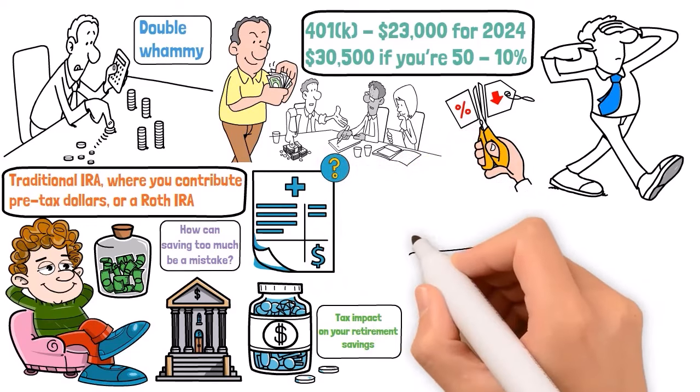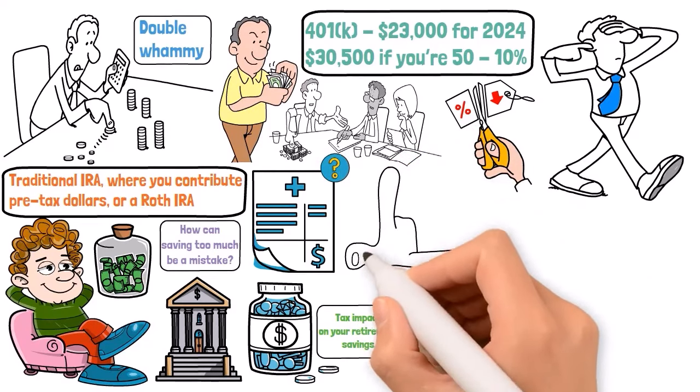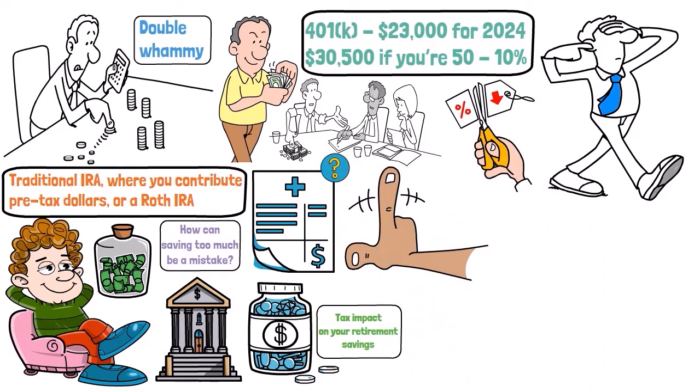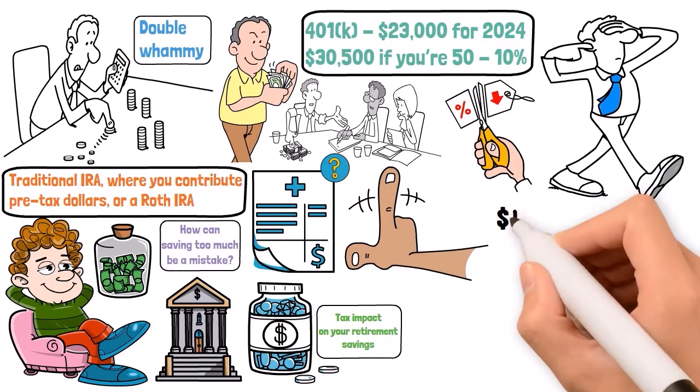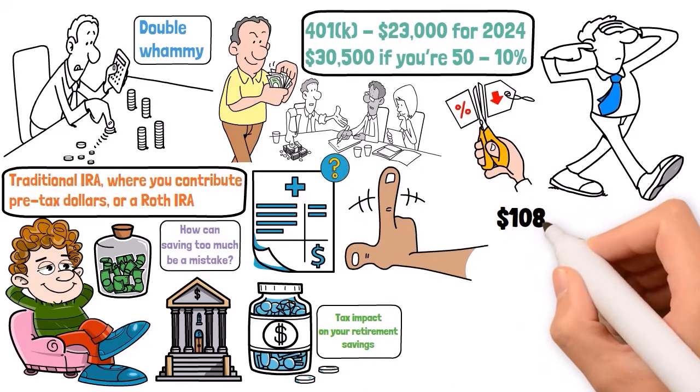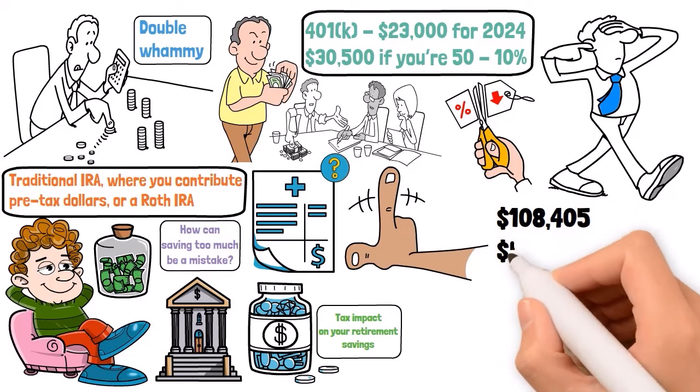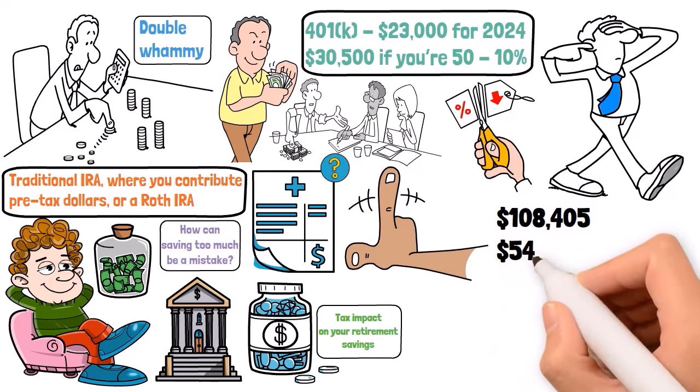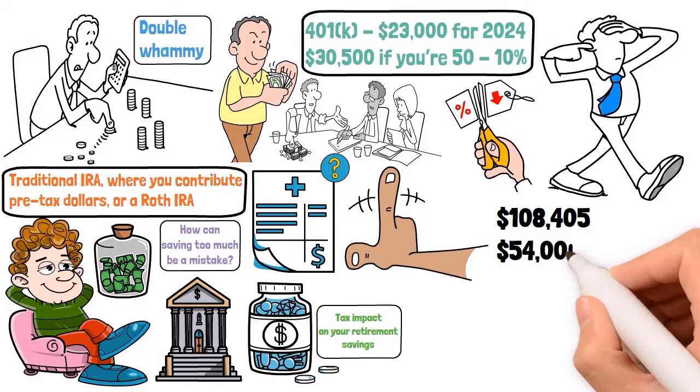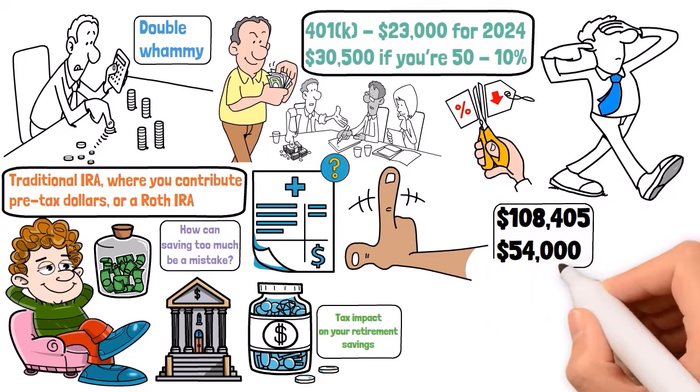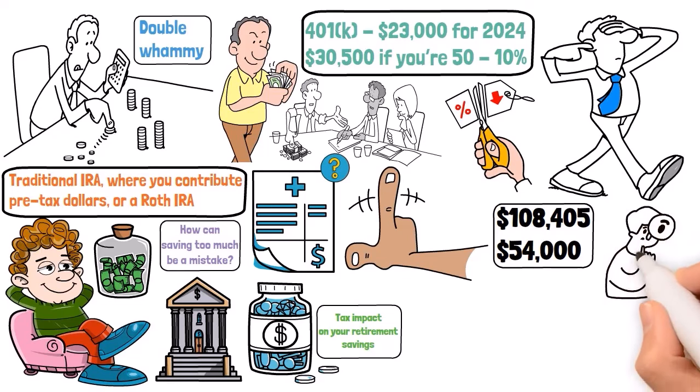Long-term care is the help you might need if you can no longer perform everyday tasks by yourself. And the costs? They're no standing ovation. We're talking an average of $108,405 per year for a private room in a nursing home. Even assisted living can run you about $54,000 annually. That's not chump change. Ignoring long-term care in your retirement planning is like ignoring the final act of a play. It's crucial, and it needs your attention. So, start exploring your options now.